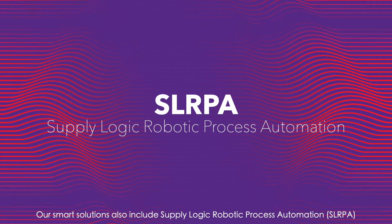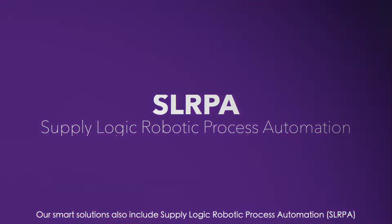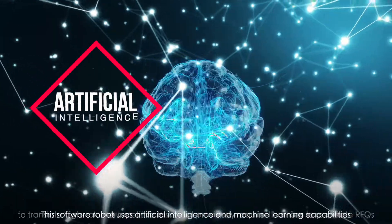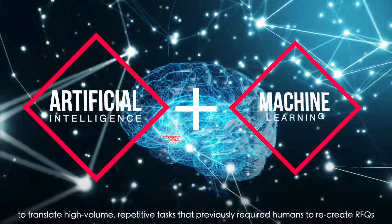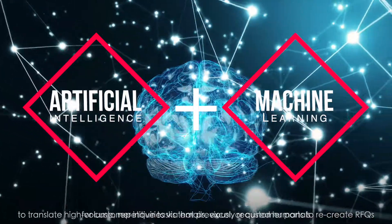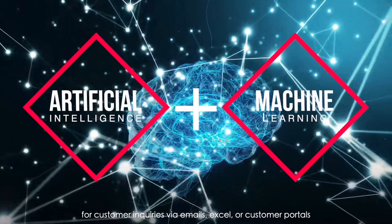Our smart solutions also include Supply Logic Robotic Process Automation, SLRPA. This software robot uses artificial intelligence and machine learning capabilities to translate high volume, repetitive tasks that previously required humans to recreate RFQs for customer inquiries via emails, Excel, or customer portals.